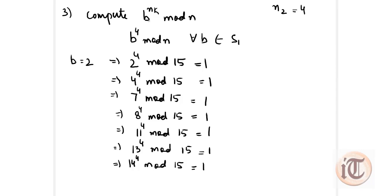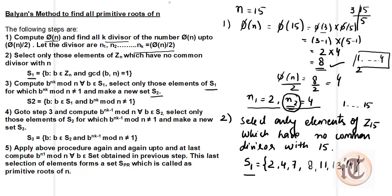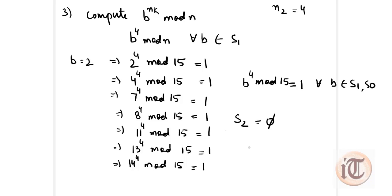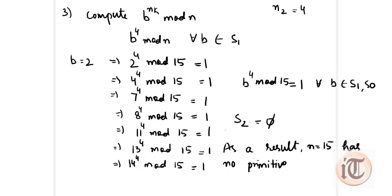We have now completed step 3. We needed to select only those elements of S1 for which b^(n_k) mod n is not equal to 1. But in this example, all elements of S1 give b^4 mod 15 = 1. This means the new set S2 is empty (phi), and as a result, n = 15 has no primitive root.